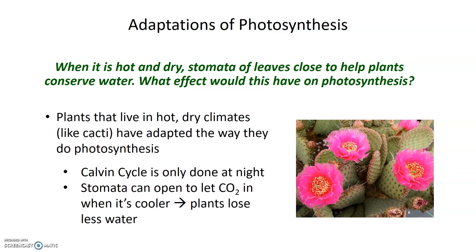Generally, if the stomata close, those plants don't have access to the CO2 they need, and so photosynthesis rates will drop and plants will grow less as a result. In order to counteract this decreased photosynthesis rate, plants that live in hot and dry places like deserts — particularly cacti — have evolved a way to do photosynthesis at night.